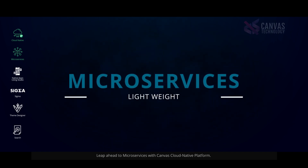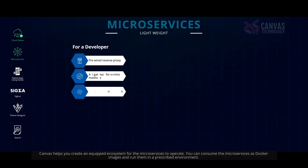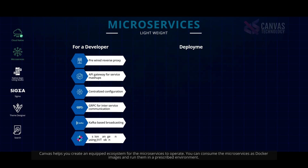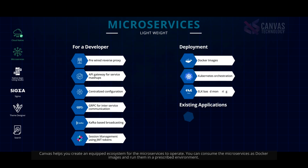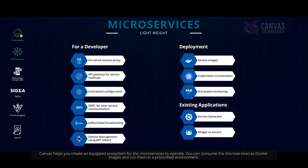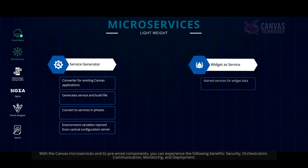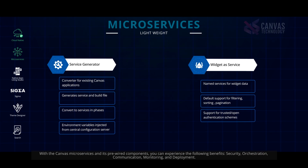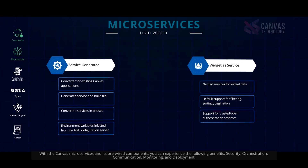Leap ahead to microservices with Canvas's cloud-native platform. Canvas helps you create an equipped ecosystem for microservices to operate. You can consume the microservices as Docker images and run them in a prescribed environment. With Canvas microservices and its pre-wired components, you can experience the following benefits: